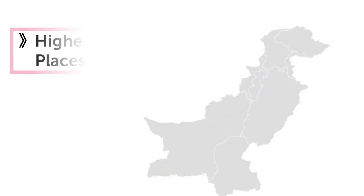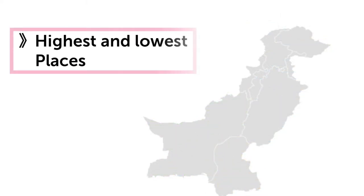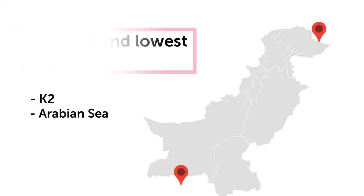The next point is highest and lowest places of Pakistan. The second highest peak in the world is K2, which is situated in the north of Pakistan, and the lowest place of Pakistan is the Arabian Sea.